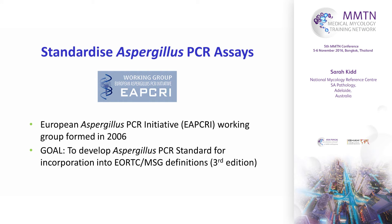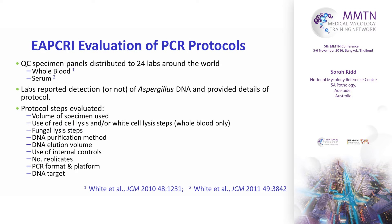The European Aspergillus PCR Initiative, EA-PCRI, was formed in 2006 with the main goal to develop an Aspergillus PCR standard for incorporation into the third edition of the criteria. They started by looking at methods people were using and evaluating their strengths and weaknesses across two studies — one based on whole blood specimens and one on serum specimens. They set up a quality-controlled panel of specimens spiked with Aspergillus conidia in whole blood and serum and distributed those to 24 laboratories around the world.